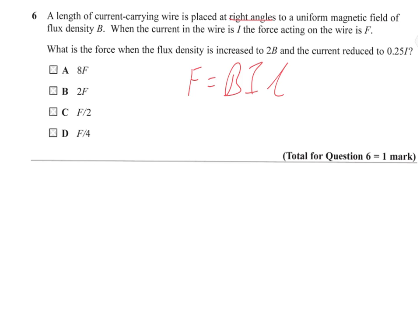So, if we've got an original force, force original, and we've got force new, I want to write that as a ratio. Then, we have to have BIL on the bottom for the original force. And the new value of 2B times 0.25I times L for the new value. And 2 times a quarter is 0.5. So, basically, what happens is we've got 0.5 over 1. So, that's that one.